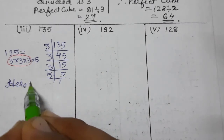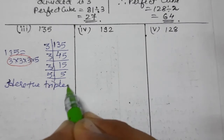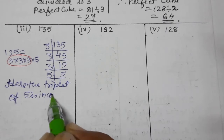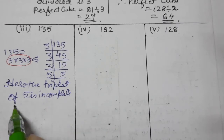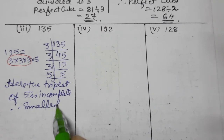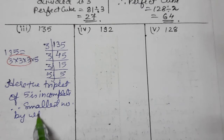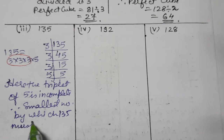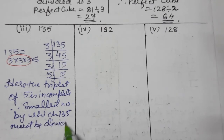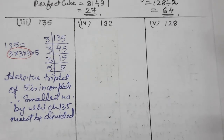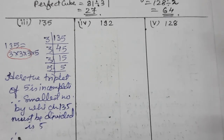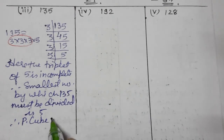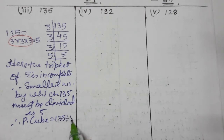We have to divide it by 5. The triplet of 5 is incomplete, therefore the smallest number by which 135 must be divided is 5. The perfect cube is 135 divided by 5, which gives 27.